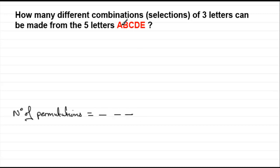Then there'll be five ways of filling the first space. So we'd have five. And then for every one of those five, there'll be four ways of filling the next space. And then for every one of those, there'll be three ways of filling the final space. Five times four times three then. A total of 60 different permutations of three letters.